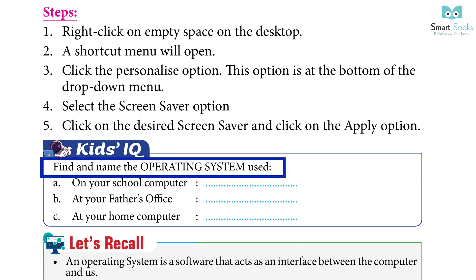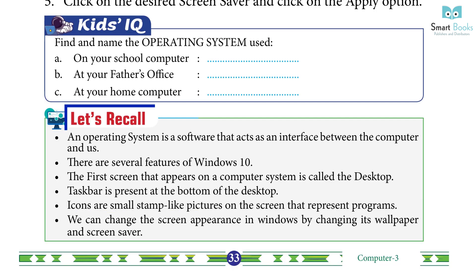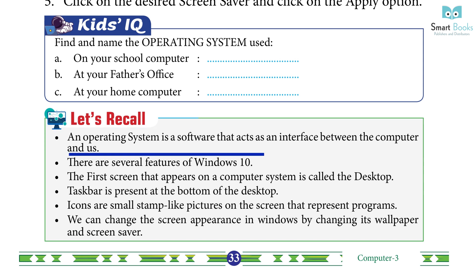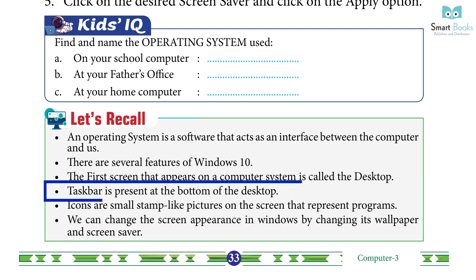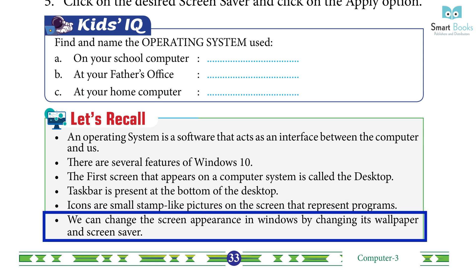Activity: Find and name the operating system used on your school computer, at your father's office, and at your home computer. Let's Recall: An operating system is a software that acts as an interface between the computer and us. There are several features of Windows 10. The first screen that appears on a computer system is called the desktop. The taskbar is present at the bottom of the desktop. Icons are small stamp-like pictures on the screen that represent programs. We can change the screen appearance in Windows by changing its wallpaper and screen saver.